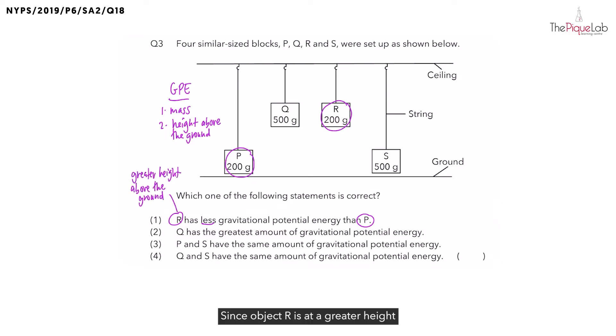Object R is at the greater height above the ground. Since object R is at the greater height above the ground compared to P, would R have more or less GPE than P? R should have more GPE than P. So statement 1 is out.